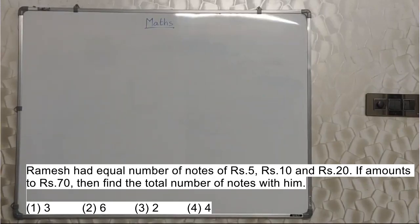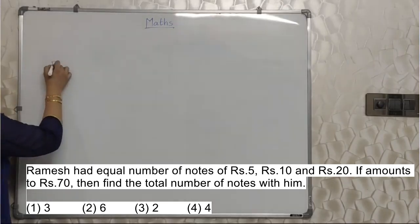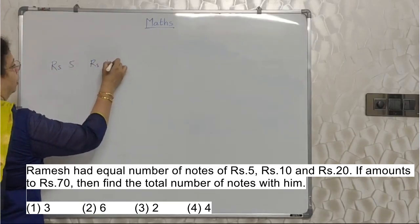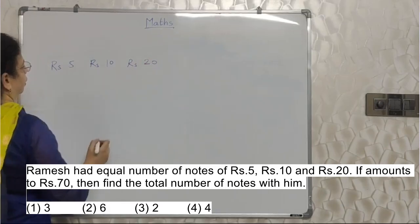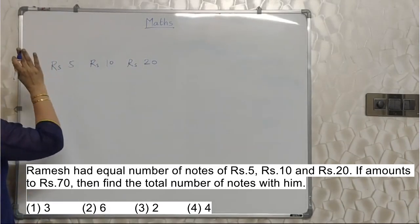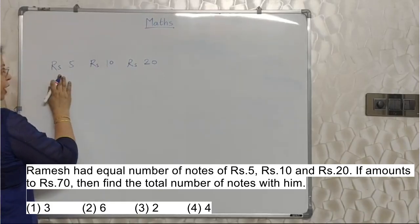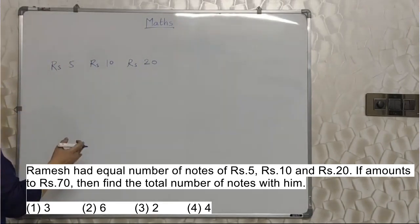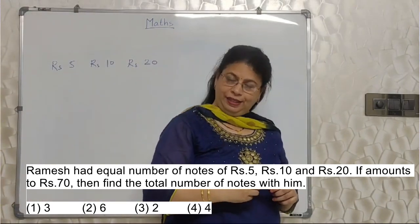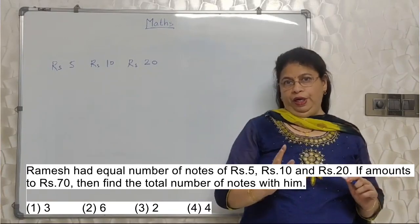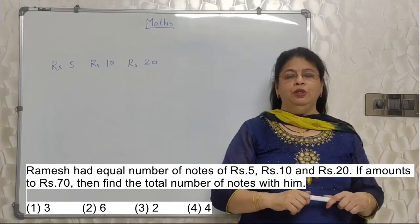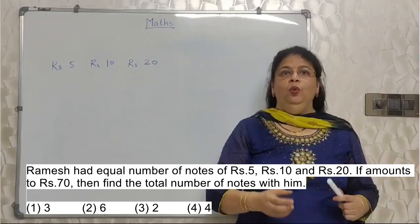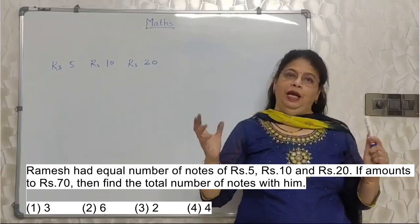Read the next sum properly. Ramesh had equal number of notes of rupees 5, rupees 10 and rupees 20. If it amounts to rupees 70, find the total number of notes with him. Rupees 5, rupees 10 and rupees 20. We don't know how many notes of each, but number of notes are same. If he has x number of notes of 5, he will have x number of notes of 10 and x number of notes of 20. We don't know what is the value of x. See, this particular sum can be solved with the help of x. That is a mathematical way of solving it. But as I keep on telling you, sometimes we have to do it smartly with the minimum possible steps and minimum possible time.